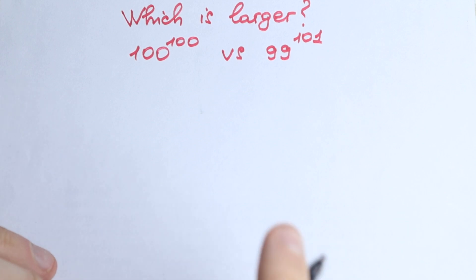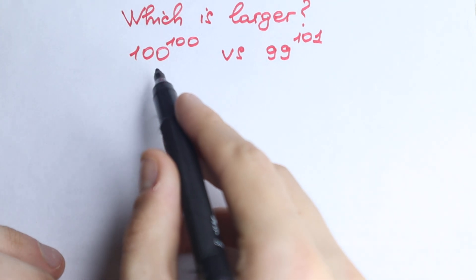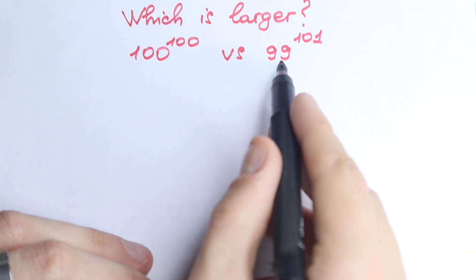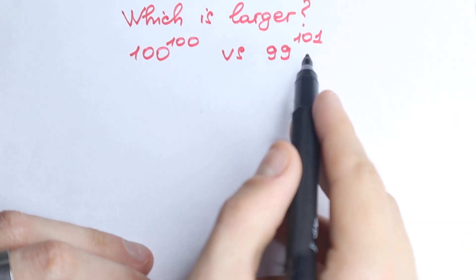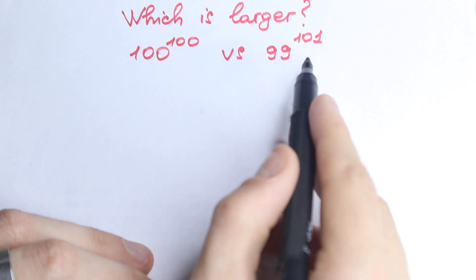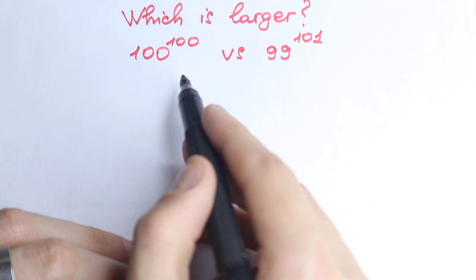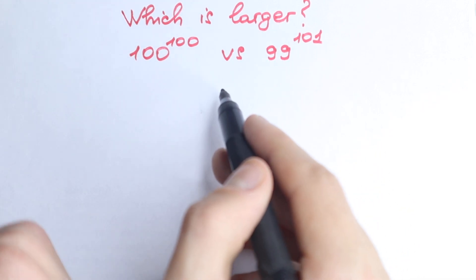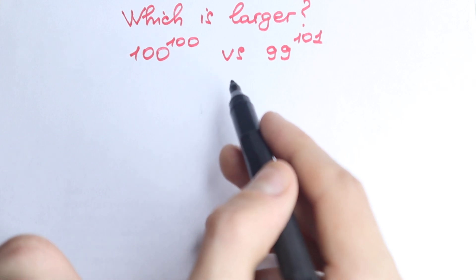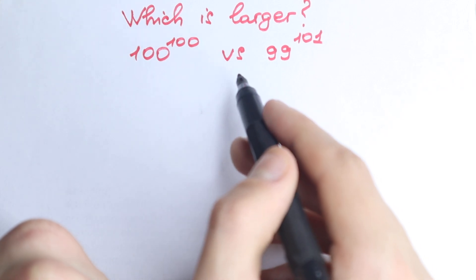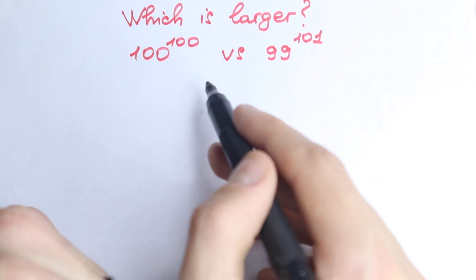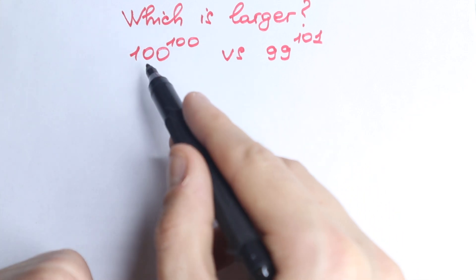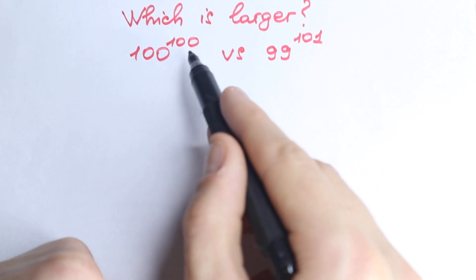So which one is larger? On the left hand side we have 100 to the power 100. On the right hand side we have 99 to the power 101. So two completely different values, two completely different numbers — so which one is larger? Pause the video and try to solve it by yourself, and of course I'm going to solve it here in just one minute so we can easily compare and check our answer.